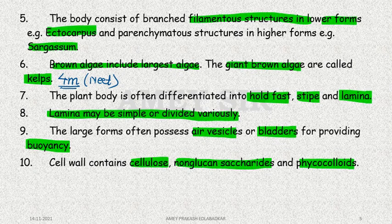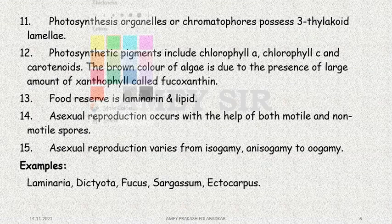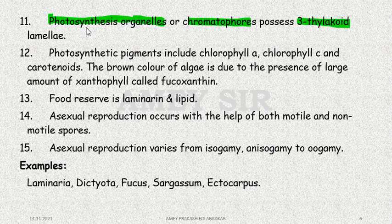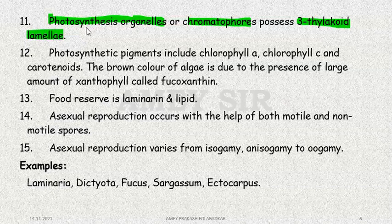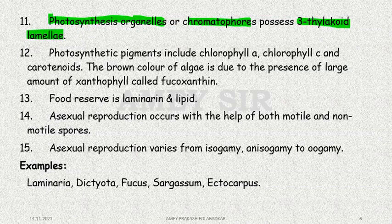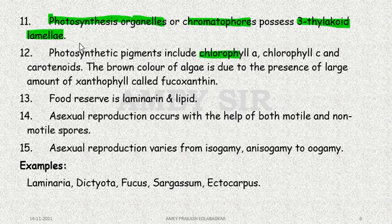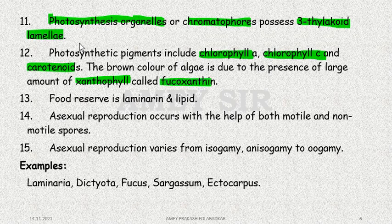Photosynthetic organelles are present, called chromatophores. Brown Algae are slightly more advanced than Red Algae, and here we get 3 thylakoid lamellae. The chloroplast structure of Red Algae is most primitive, Brown Algae is intermediate, and Green Algae is most advanced — similar to bryophytes. Chlorophyll A, Chlorophyll C, and carotenoids are present, but the brown color is due to excess xanthophyll called fucoxanthin. Reserve food is laminarine, starch, and lipids.